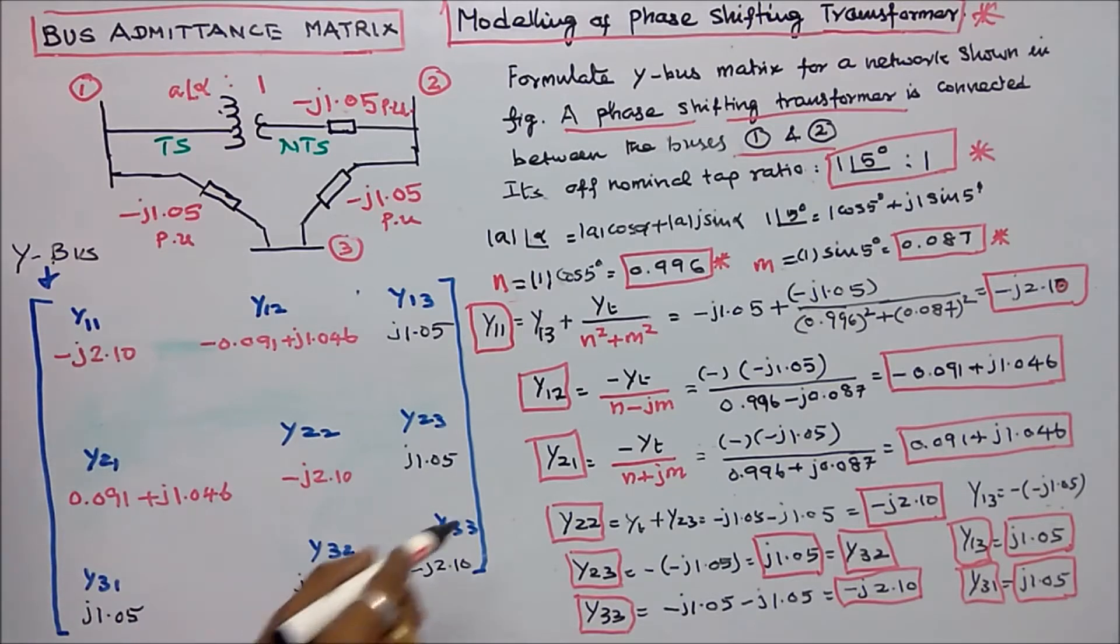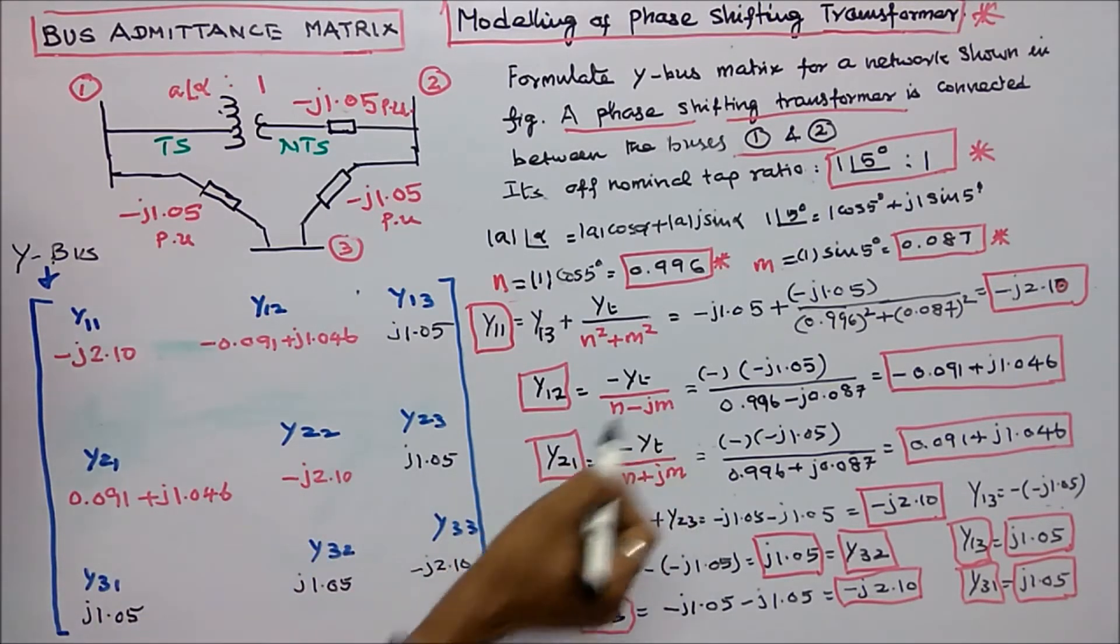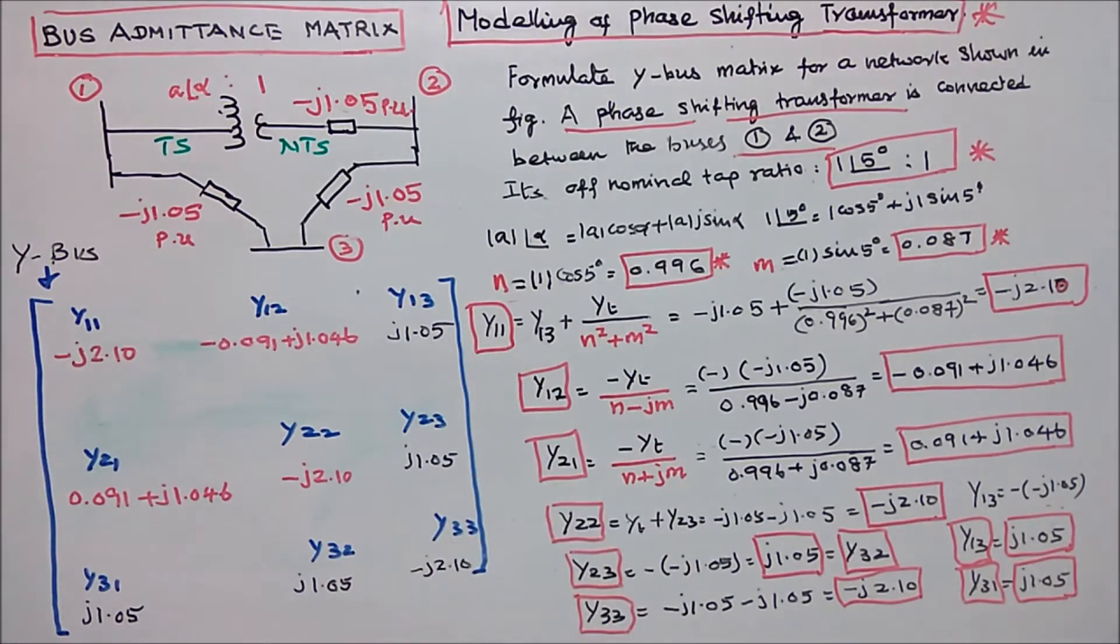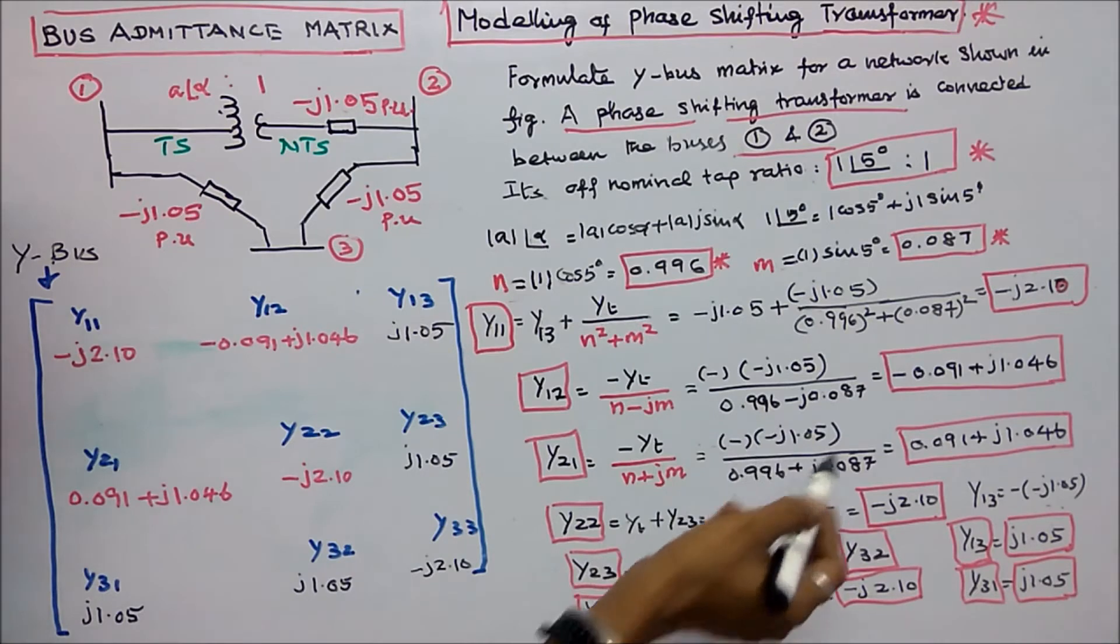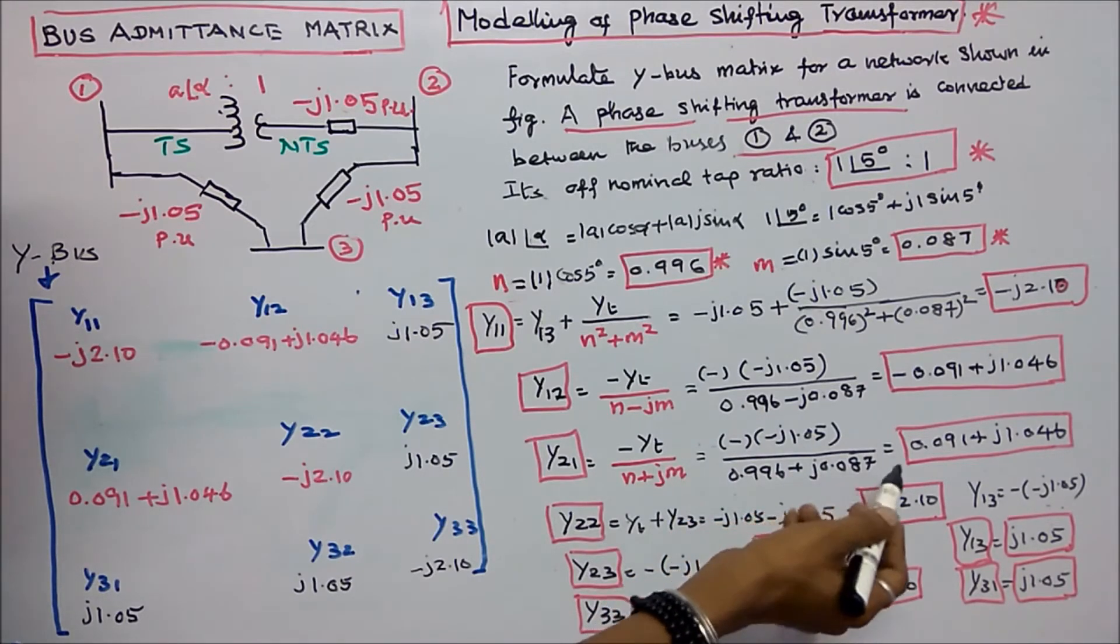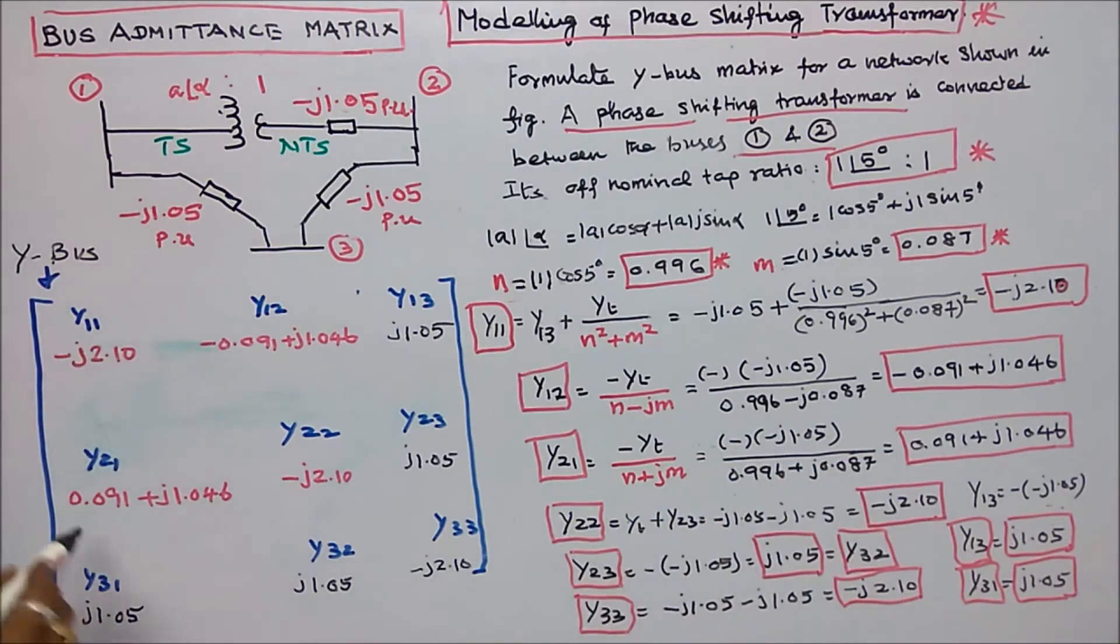The next is we have to find y21. y21 is equal to minus yt divided by n plus j m. So minus into minus plus j 1.05 divided by 0.996 plus j 0.087. That is equal to 0.091 plus j 1.046.